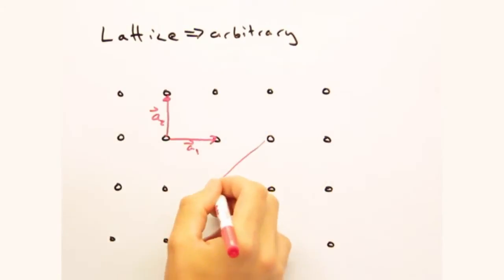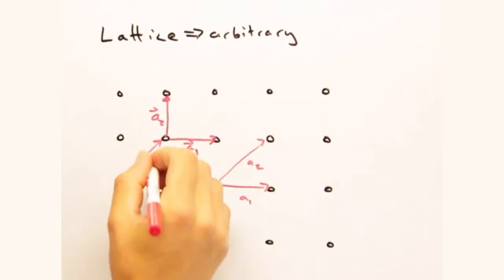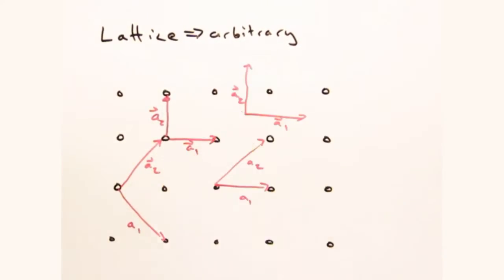Okay, so earlier, when we originally constructed our real space lattices, it felt almost arbitrary how we specified our origin and lattice vectors.